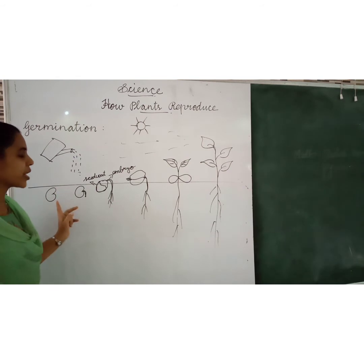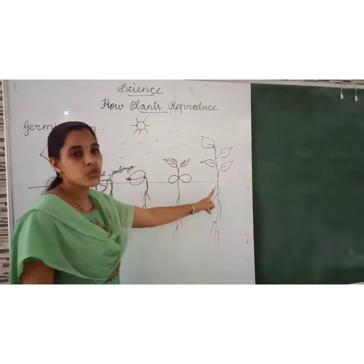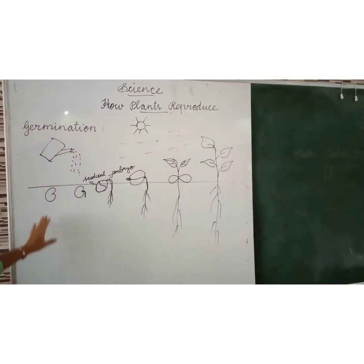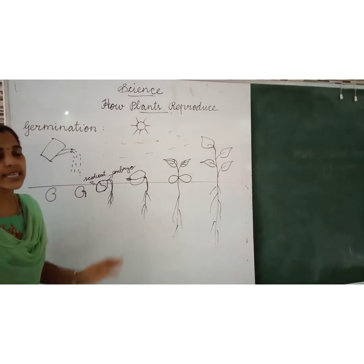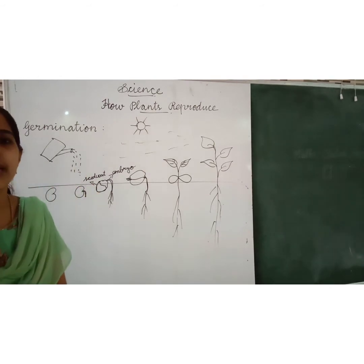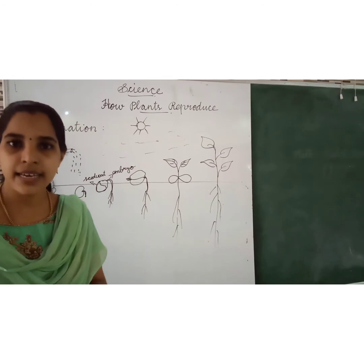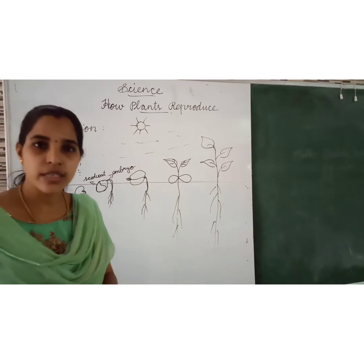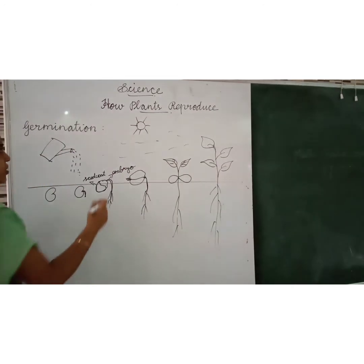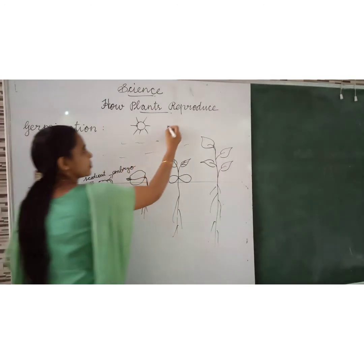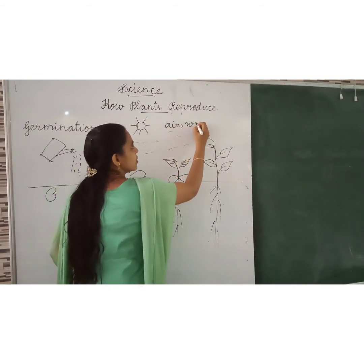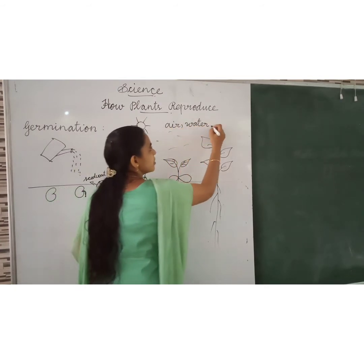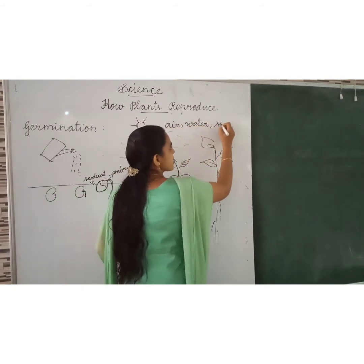The seed will grow into a new plant through germination. What are the things needed for germination? Air, water and sunlight. Air, water and sunlight are the conditions needed.